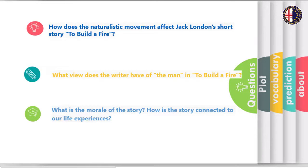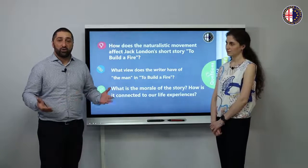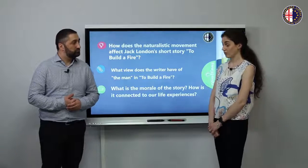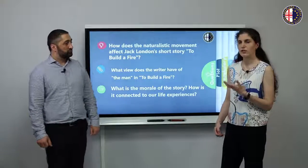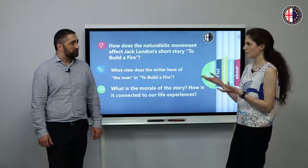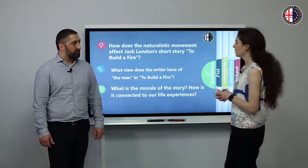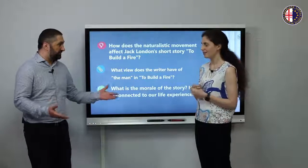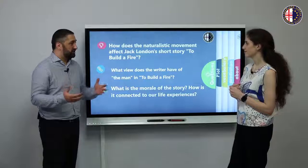First of all, let's define the naturalistic movement itself. The author uses this realism literary movement in the story to show how nature can be uncaring and violent, and no matter what you do and no matter where you are, it's always there. It's also noteworthy that the language the author uses is very realistic, as if the reader is a part of the story itself. We see the main character — the man, the protagonist — as some kind of scientific study. You observe him as being part of nature. That was the author's intention.